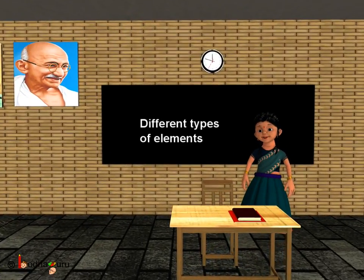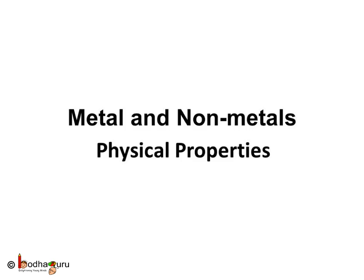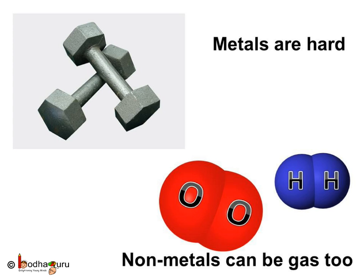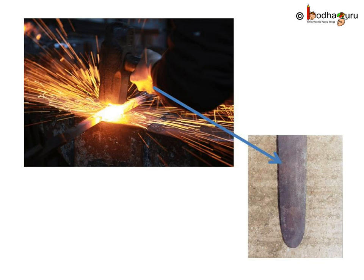Good morning children. Today we shall learn about different types of elements — that is metals and non-metals. We already know about elements which are called metals, like iron is a metal. But what exactly is a metal? What elements are metals? Whenever we think of metal, we imagine something hard or strong. Yes, metals are hard in general. Oxygen, nitrogen, hydrogen, etc., which are found as gases, are non-metals.